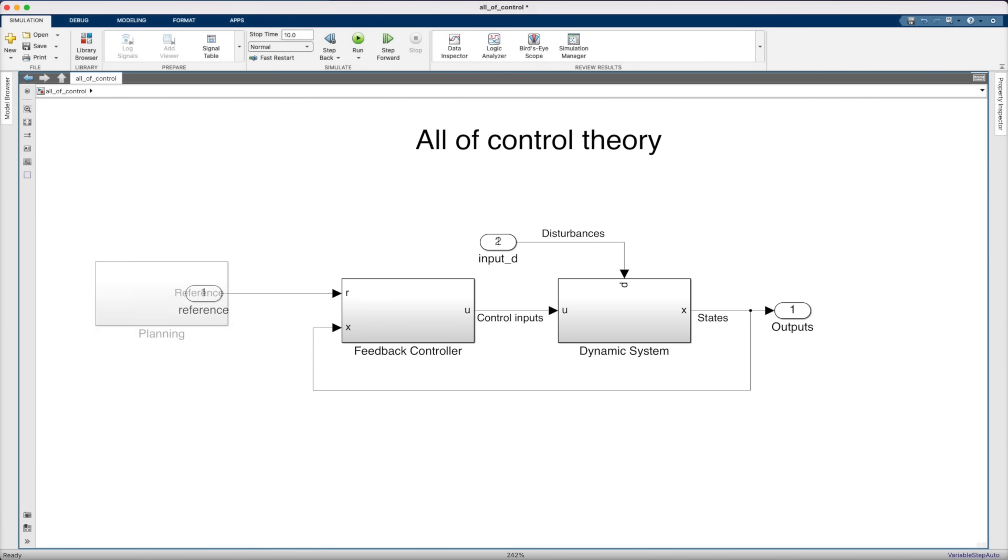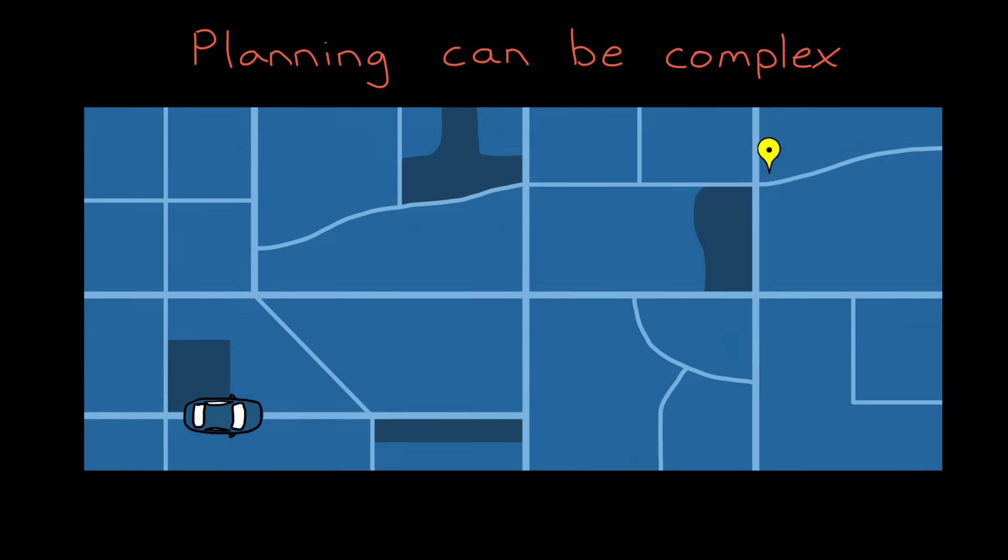And this is where planning comes in. The control system can't follow a reference if one doesn't exist. And so planning is a very important aspect of designing a control system. With a self-driving car, for example, planning has to figure out a path to the destination while avoiding obstacles, and it has to follow the rules of the road. Plus, it has to come up with a plan that the car is physically able to follow.